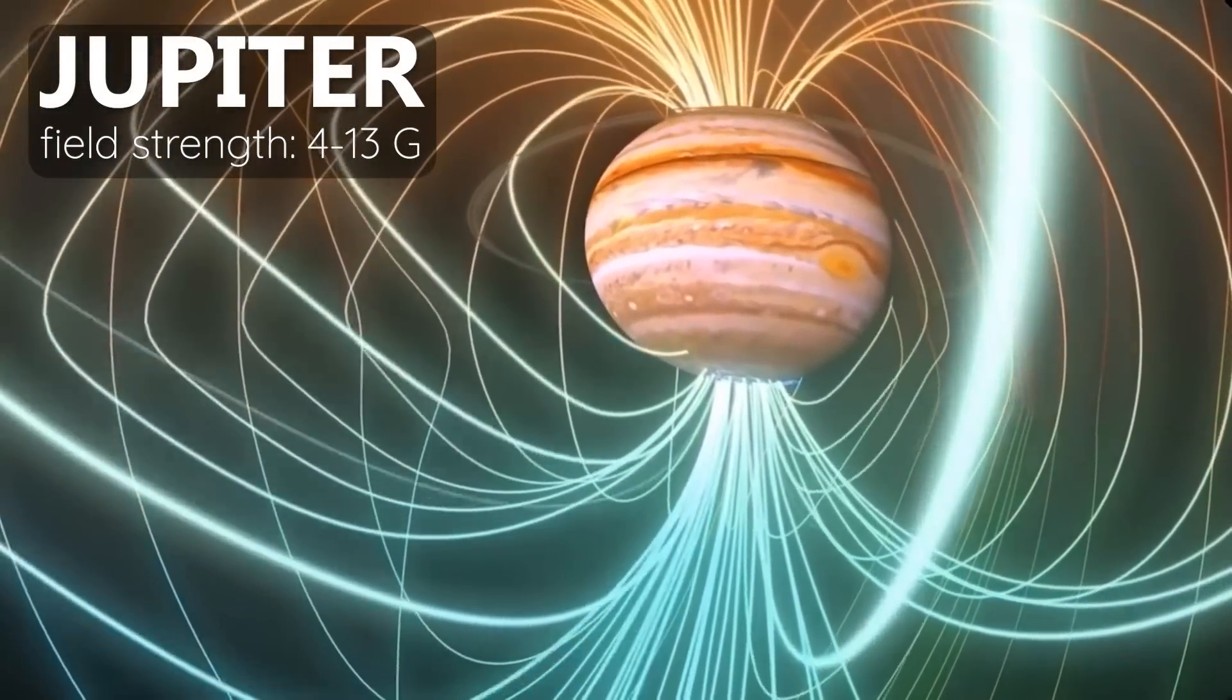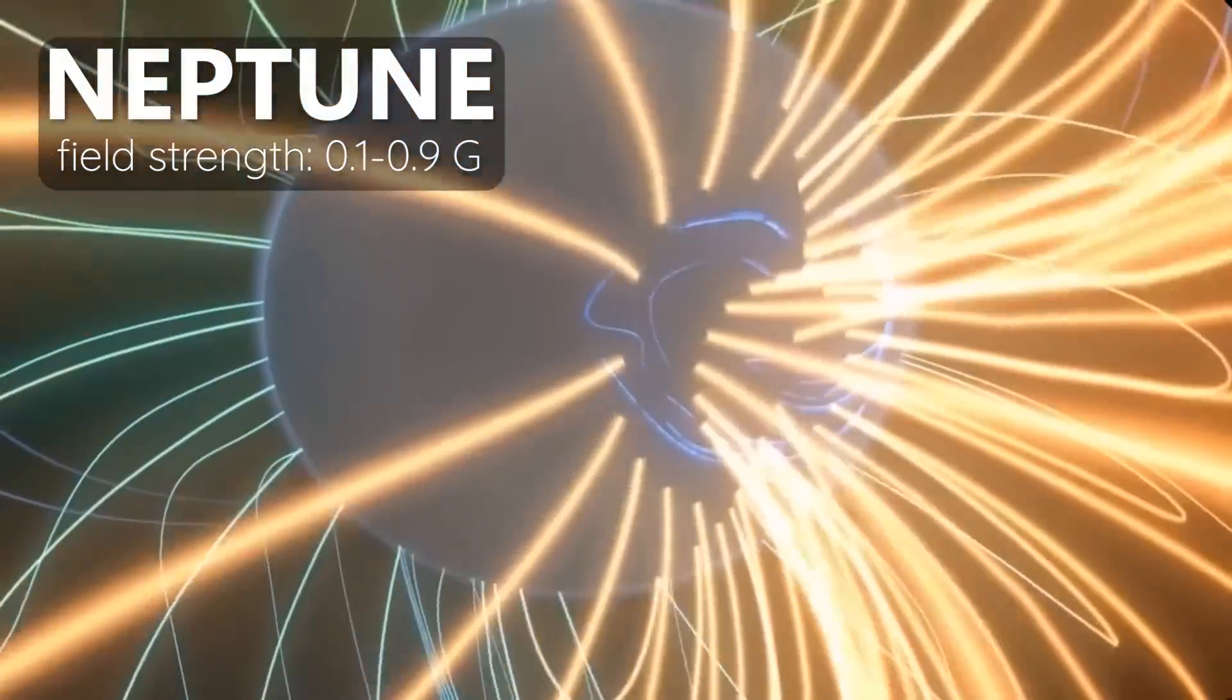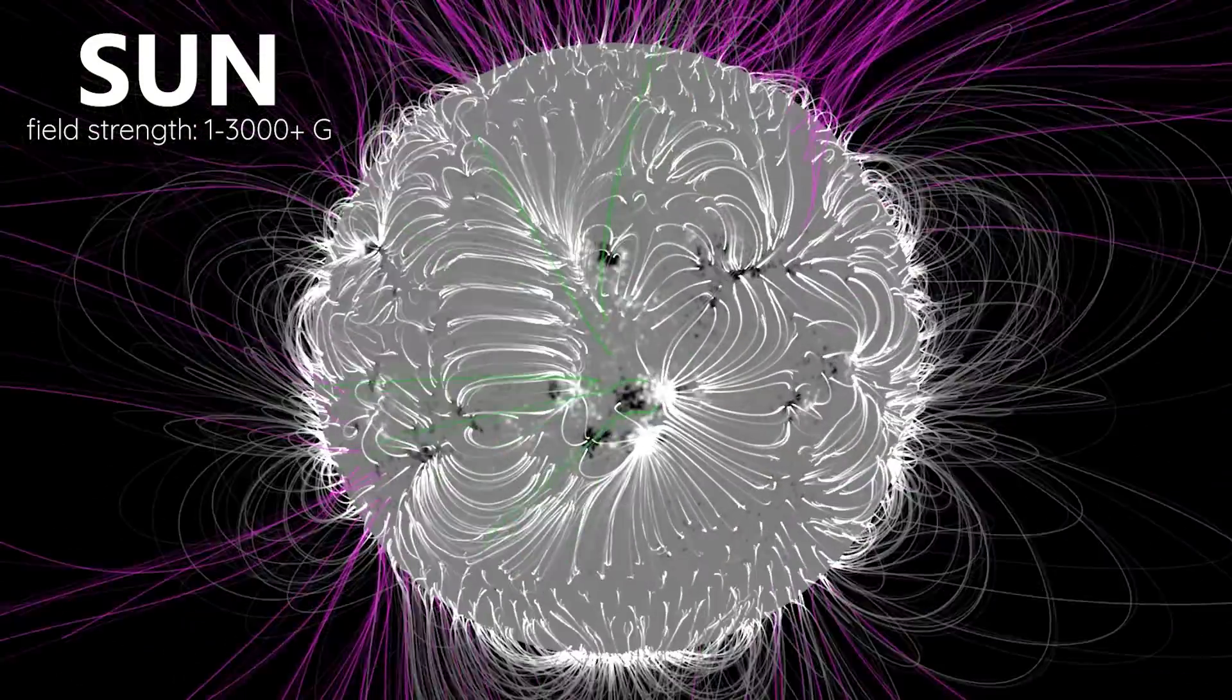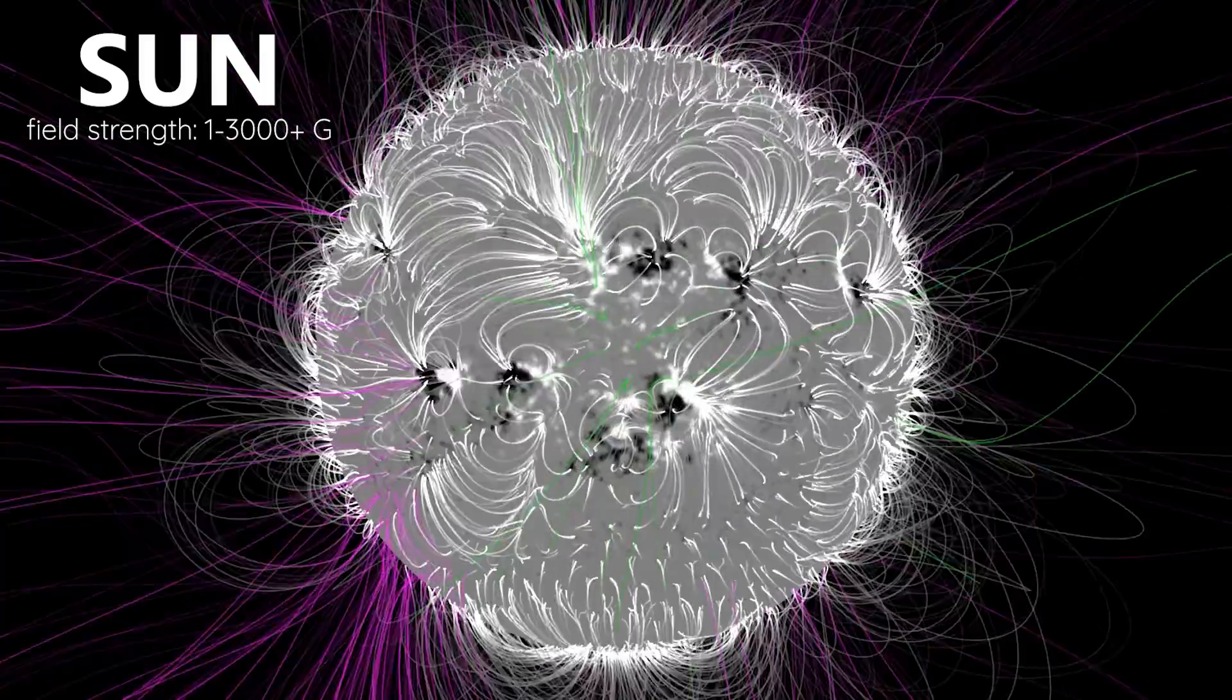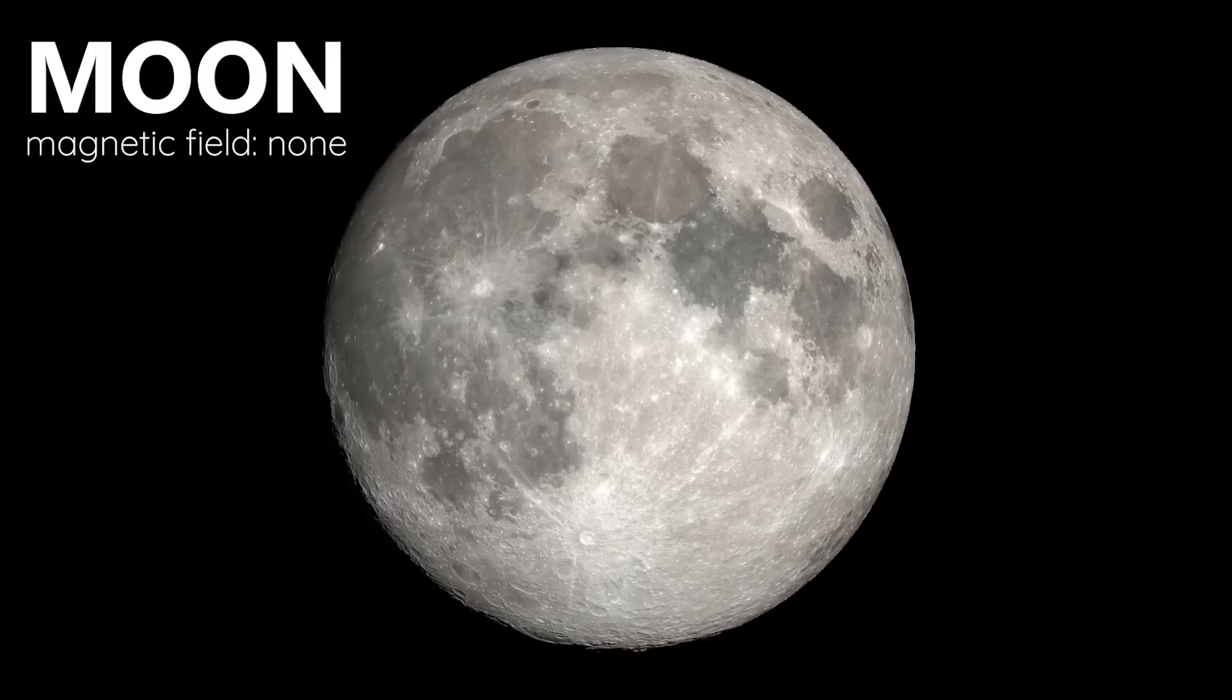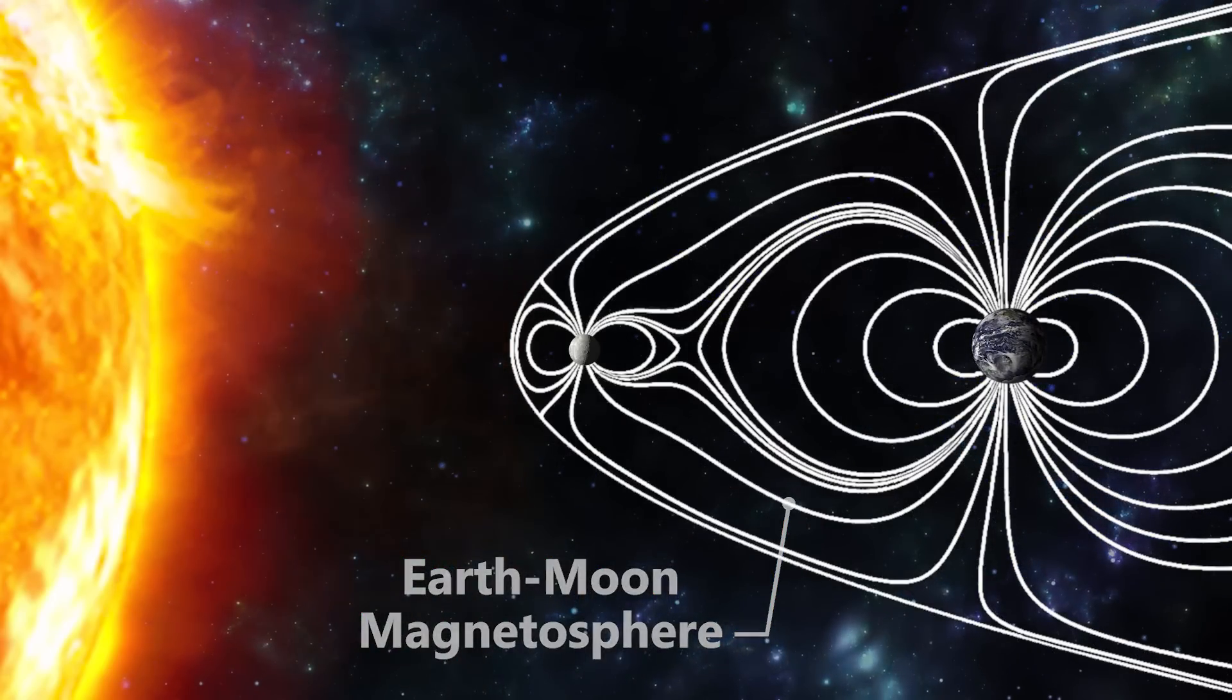Mercury has a magnetic field, but it's only about 1% of the strength of Earth. Then the gas giants, Jupiter, Saturn, Uranus, and Neptune also have magnetic fields, quite powerful ones at that, and the sun has the most powerful magnetic field by far in the solar system. Earth's moon does not have an internally generated magnetic field, though it's speculated that it used to in the past early after its formation.